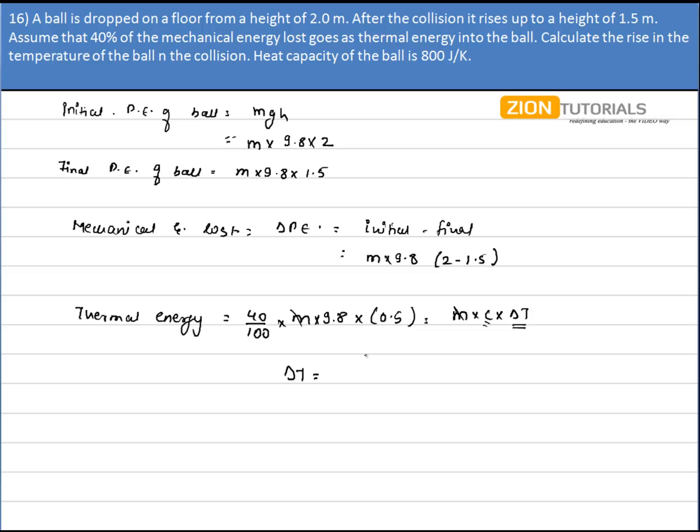So the rise in temperature is 40 over 100 times 9.8 times 0.5 divided by C, that is 800. On solving this, I get the change in temperature as 0.025 degrees Celsius. That is my answer.